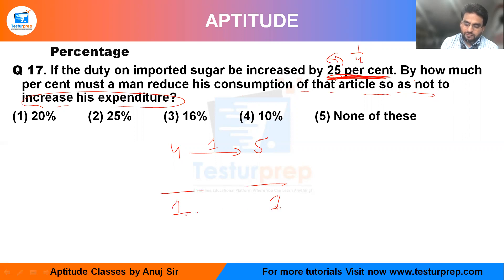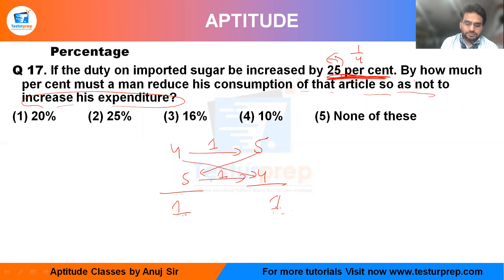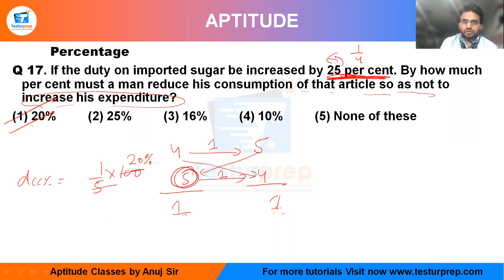To make them equal, we put 5 over there and 4 there — that means on 5 it will become 4. So 1 is the decrement, and the decrement percentage equals 1 decrease on the initial value of 5. Multiplying by 100 gives 20%. The answer is option number 1 for question number 17.